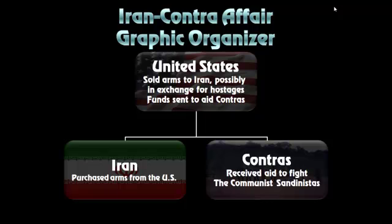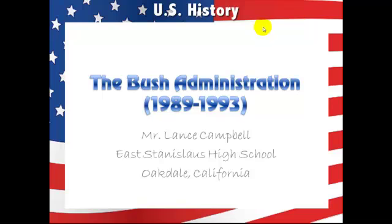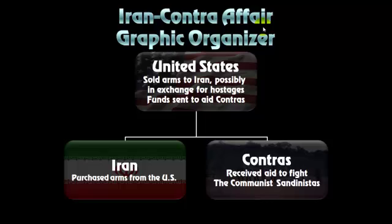Here we have a graphic organizer of the Iran-Contra Affair showing the three parties involved: the United States, Iran, and the Contras. The United States sold arms to Iran, possibly in exchange for hostages. The funds were sent to aid the Contras. Iran purchased arms from the United States. The Contras received aid to fight the communist Sandinistas.